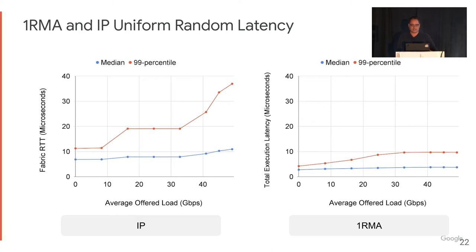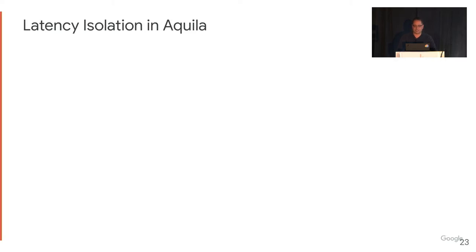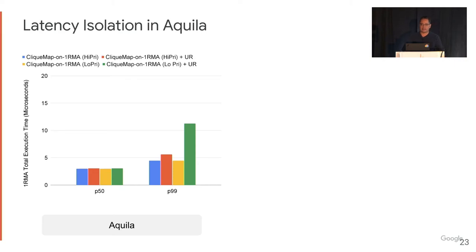First, we run IP separately from 1RMA. Plotting uniform random offered load on the x-axis and our latency metrics on the y-axis, we see that for 1RMA we achieve less than 10 microseconds tail latency at high load, and for IP we achieve 40 microseconds latency. Then we ran an isolation experiment with ClickMap traffic and bulk IP traffic on Pony Express. When ClickMap runs on a higher-priority virtual channel than the bulk IP traffic, we see almost no effect from running the bulk IP traffic.